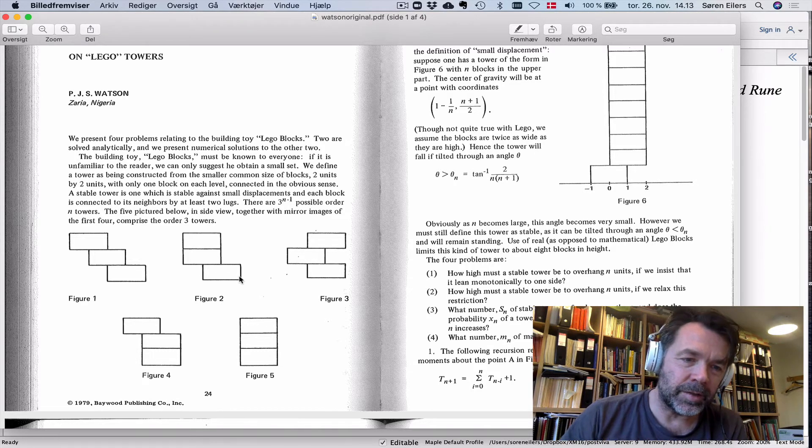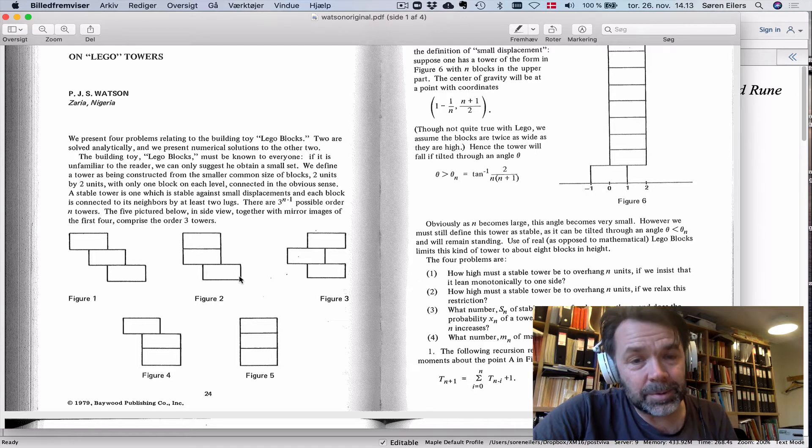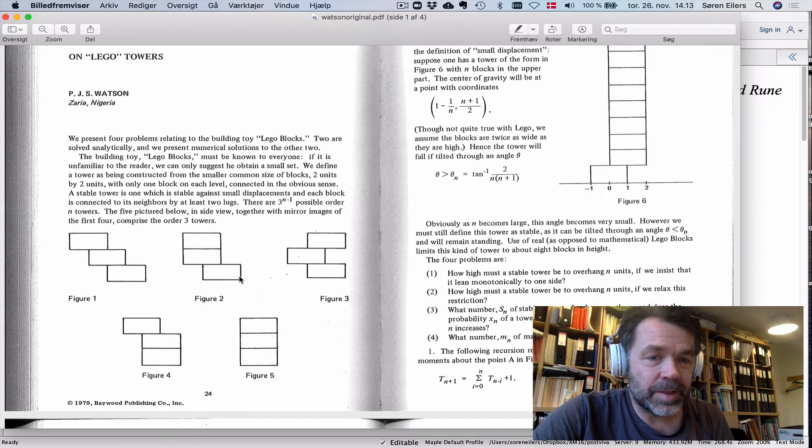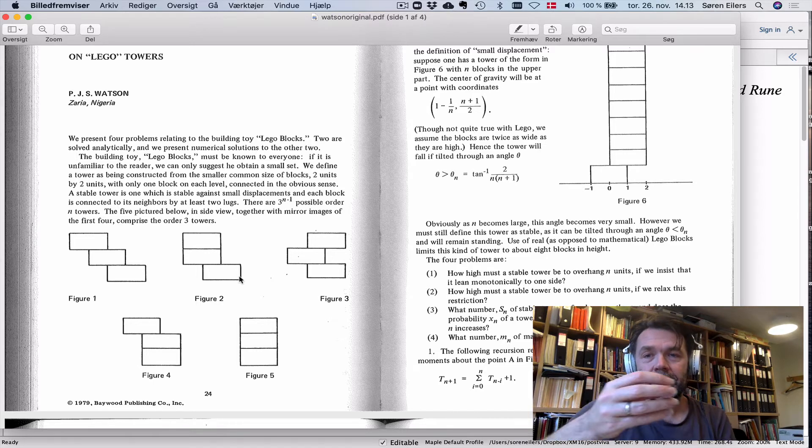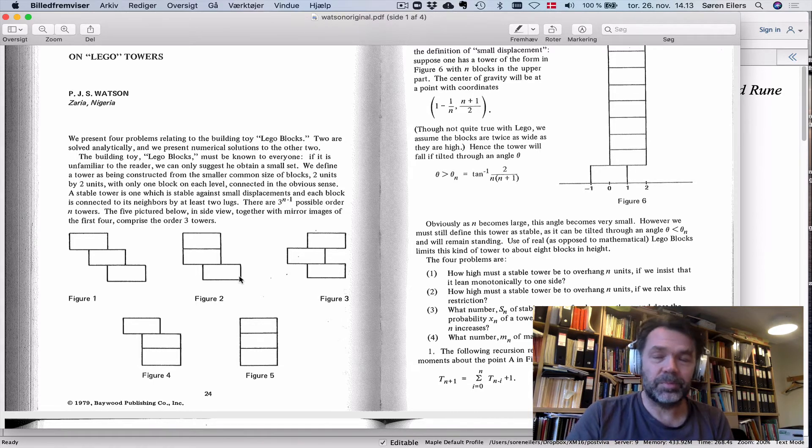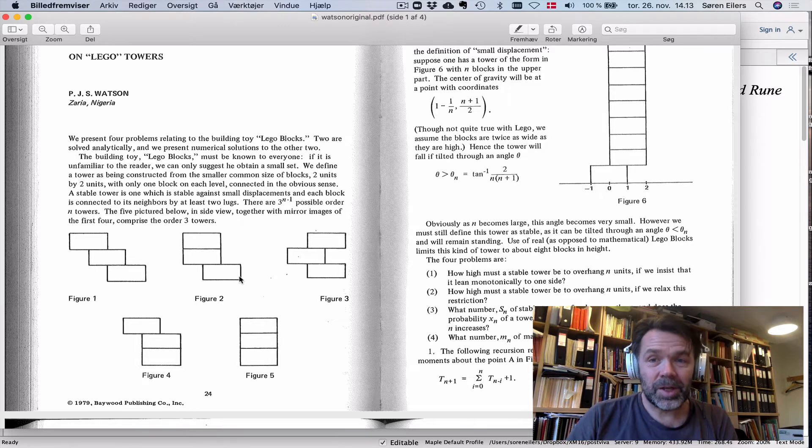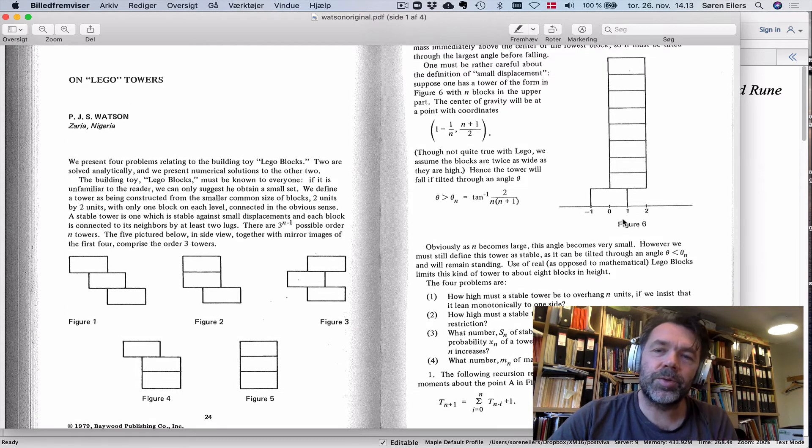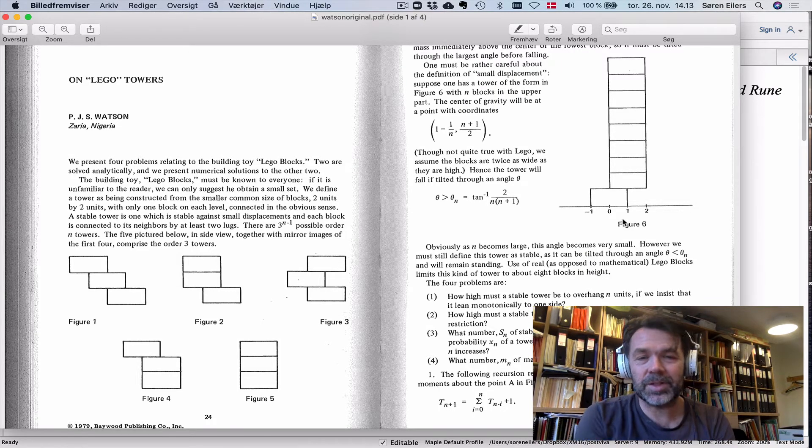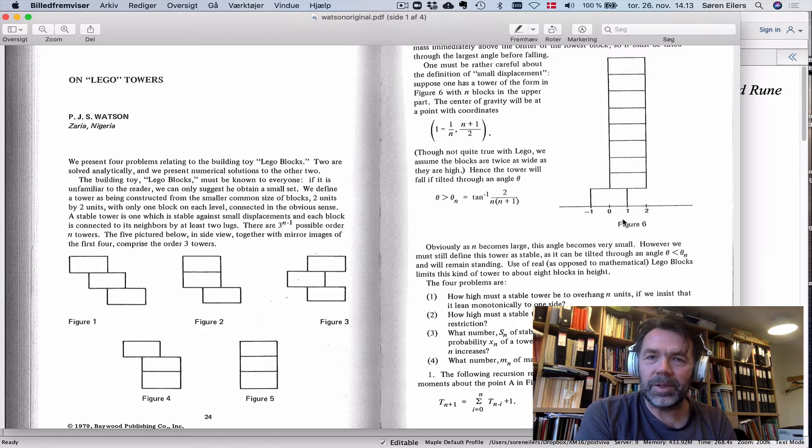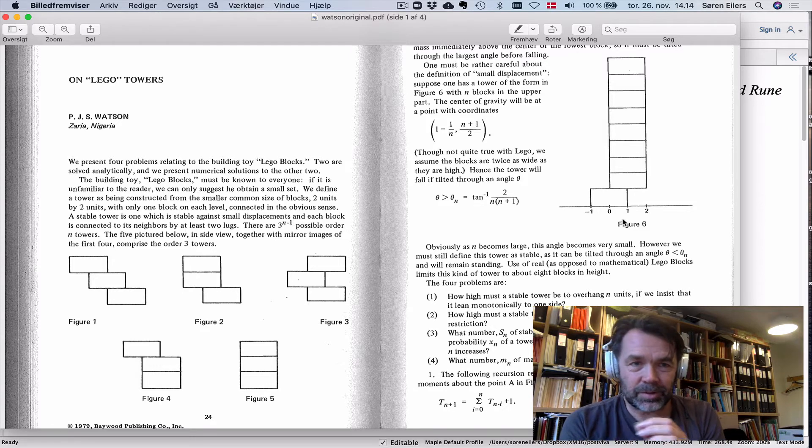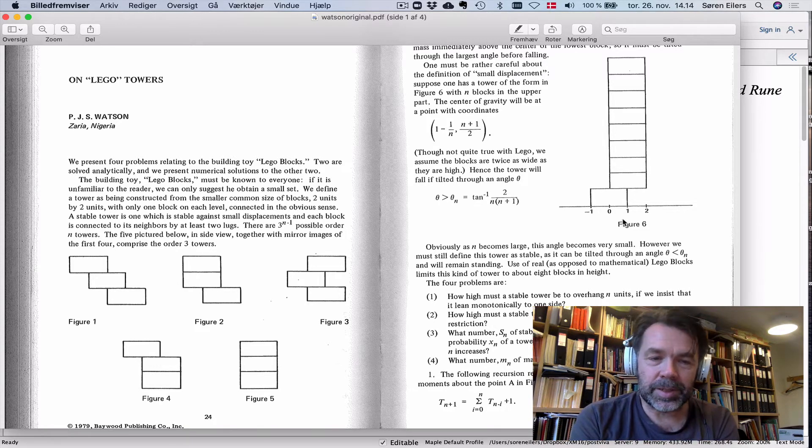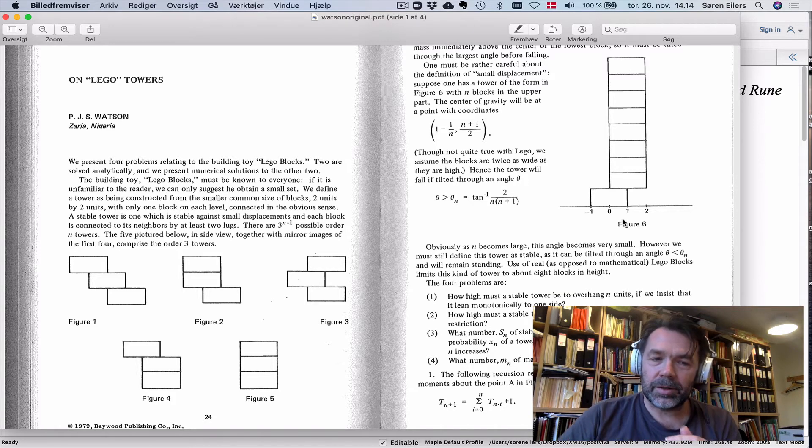He's interested in how many of these buildings are stable, in the sense that when you compute the center of gravity, it should fall within the base block. If the center of gravity is outside the base block, the laws of physics tell you the building tumbles. The idea is to look at buildings that are maximally stable, where the center of gravity is right in the middle of the base block.